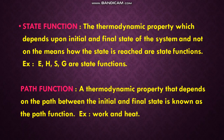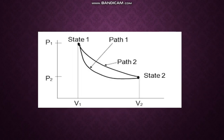Path function is the property that depends on the path between the initial and final state. Examples: work and heat. These depend on the path, not on the initial and final states. This can be represented in a pressure versus volume diagram — state function depends only on state one and state two, while path functions depend upon path one or path two.